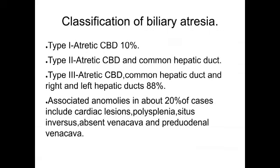Classification of biliary atresia: Type 1 is atretic CBD, 10% of cases. Type 2 is atretic common bile duct and common hepatic duct. Type 3 is atretic common bile duct, common hepatic duct, and right and left hepatic ducts — 88% of cases. Associated anomalies occur in about 20% of cases and include cardiac lesions, polysplenia, situs inversus, absent inferior vena cava, and pre-duodenal inferior vena cava.